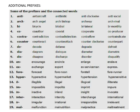Now we are going to learn some additional prefixes and connected words. Anti-: anti-aircraft, antibiotic, anti-clockwise, anti-social. Arch-: archangel, archbishop, archway, arch-rival.